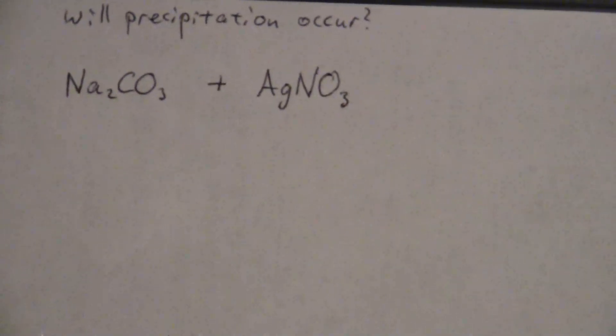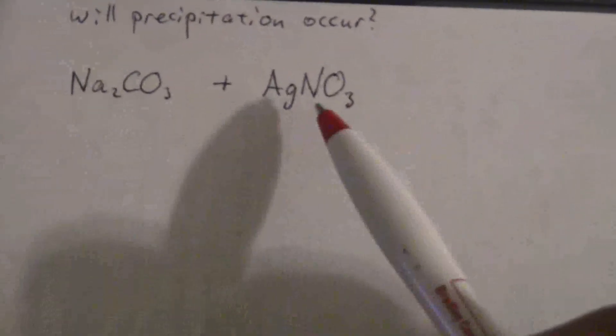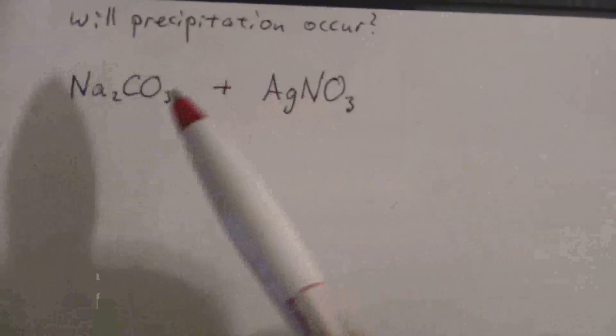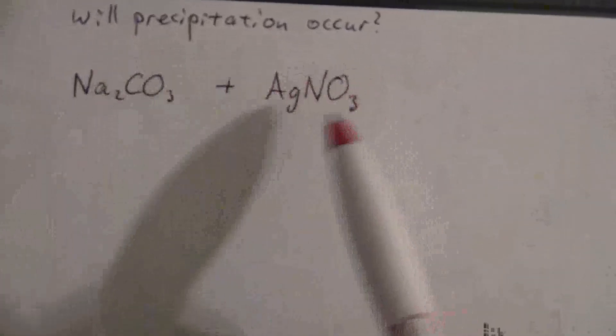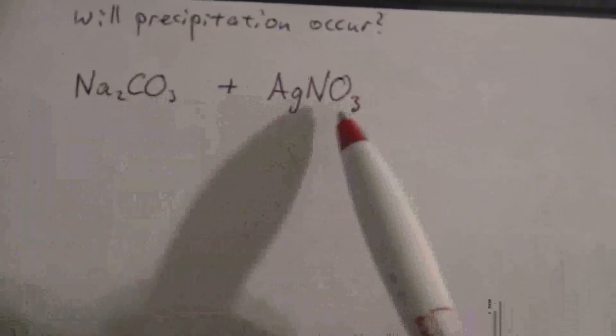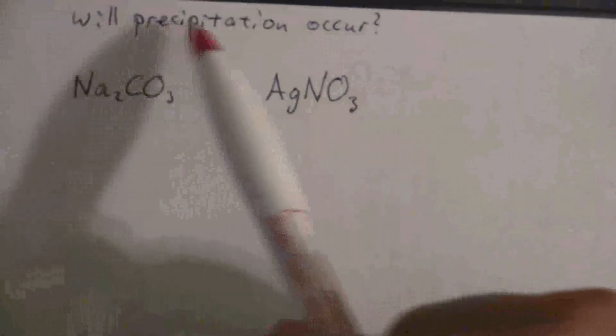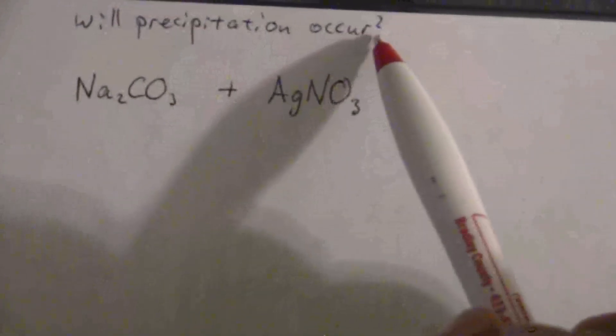All right, so here we have two solutions that are mixed. A solution of sodium carbonate and silver nitrate. Two solutions mixed and we want to know will precipitation occur?